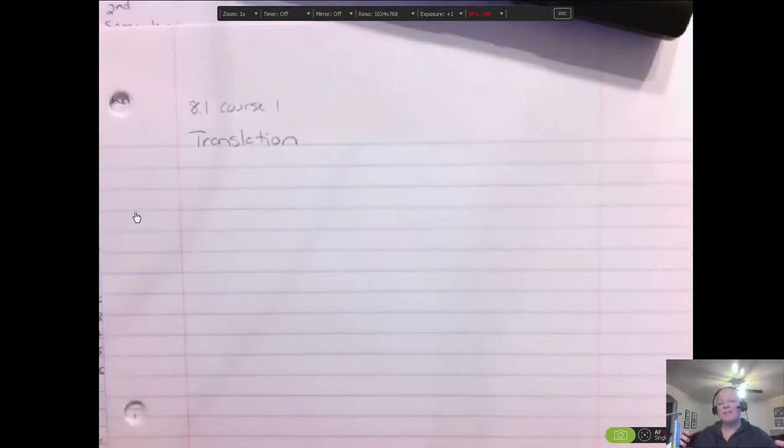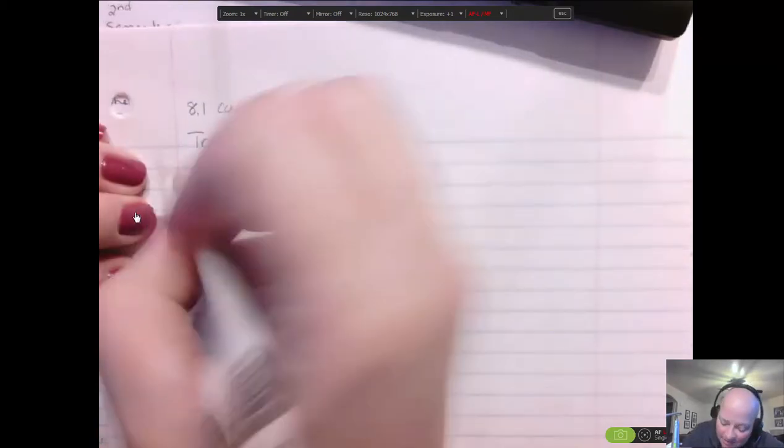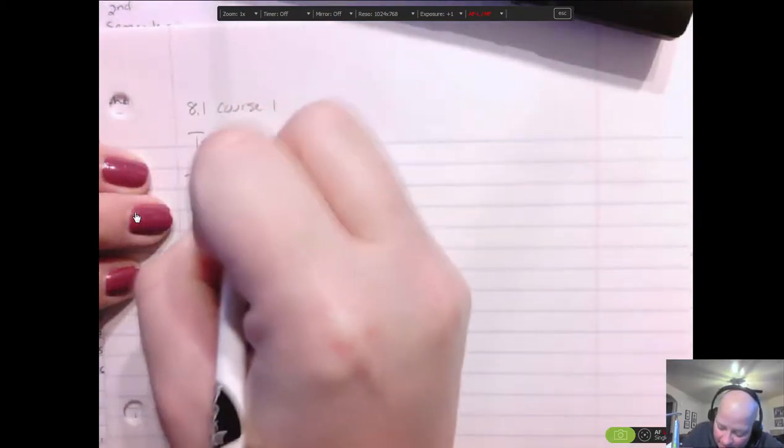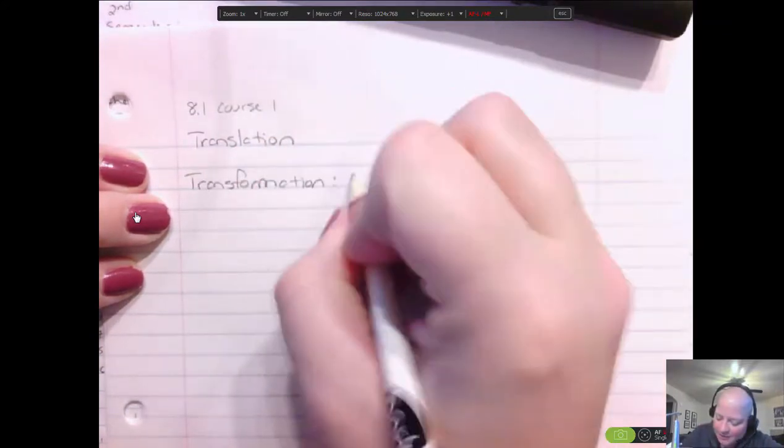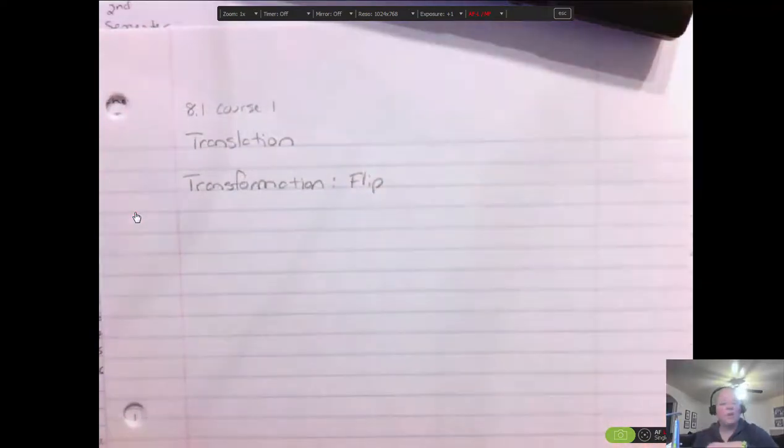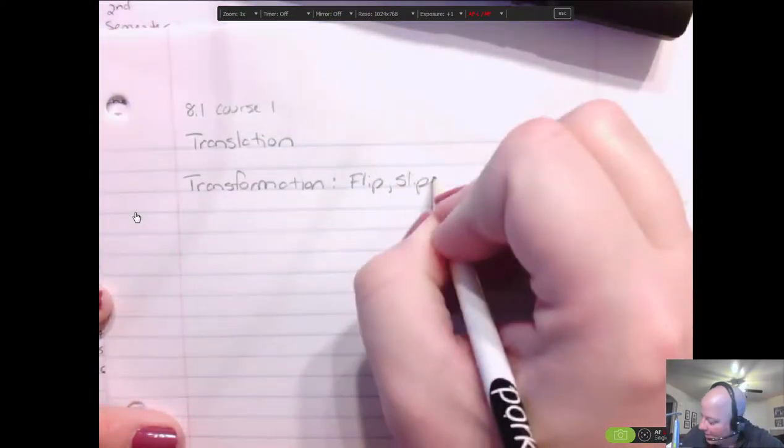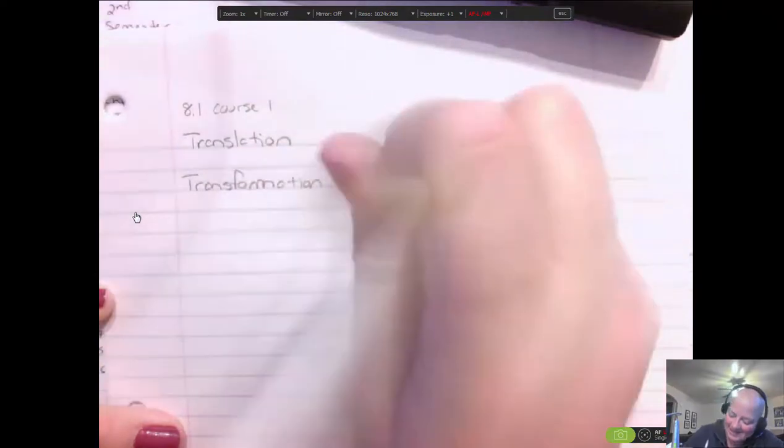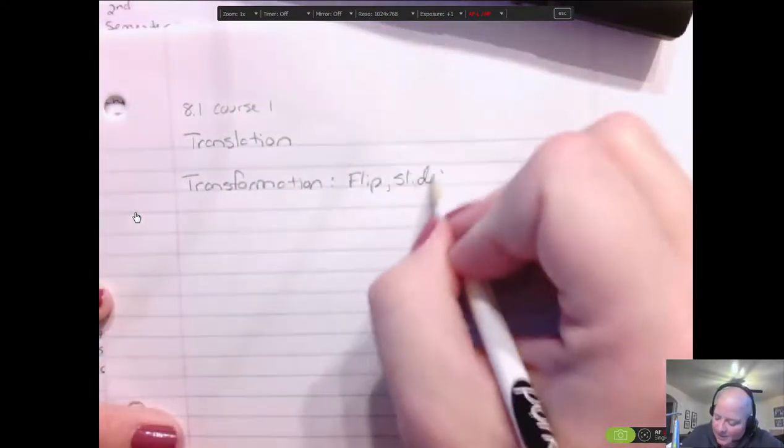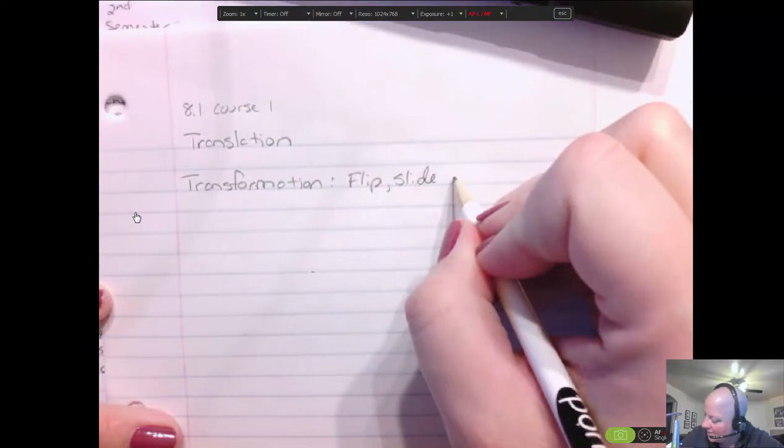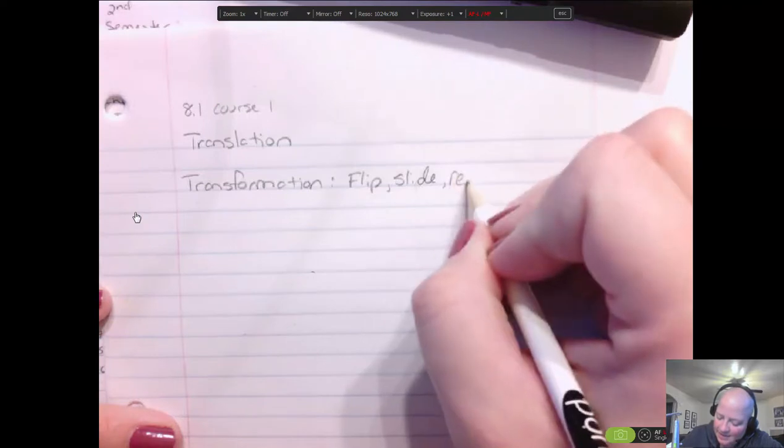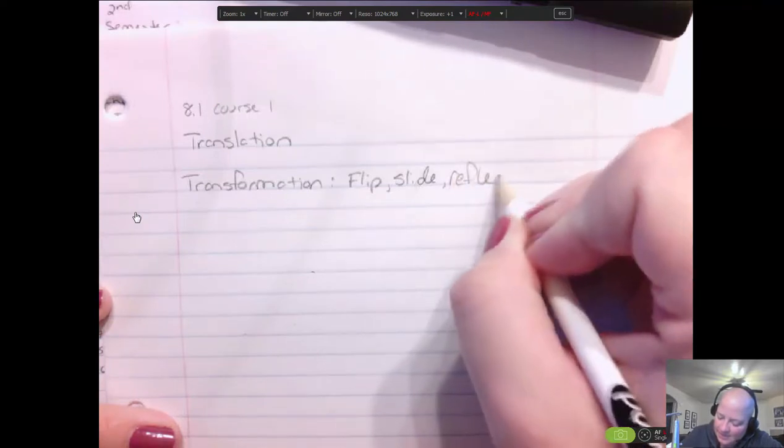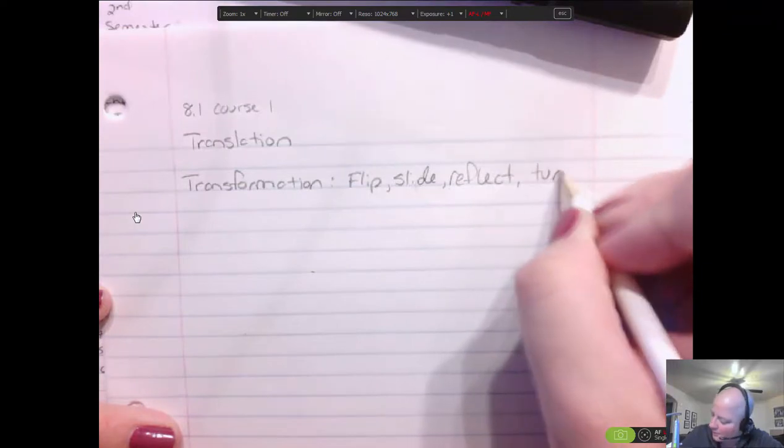So first of all, this whole chapter is on transformations, so let's make sure you understand what that means. Transformations is where you're going to flip something like a shape or a dot on a graph, or a line or anything. You're going to flip it, slide it, or turn it, reflect or turn a figure.